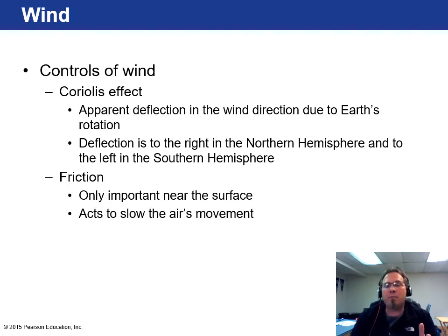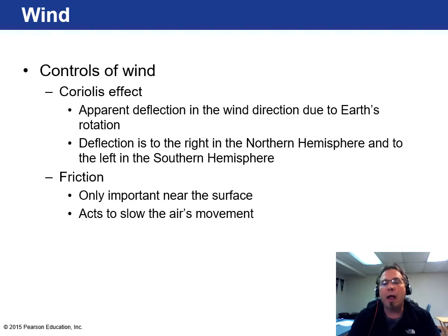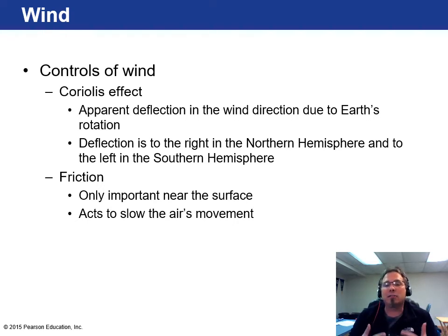The other factor is friction, which only plays a role near the surface. Friction acts to slow the wind down, especially when you have lots of topography — things like the Appalachian Mountains, rolling hills, and other terrain features that become impediments to the wind.